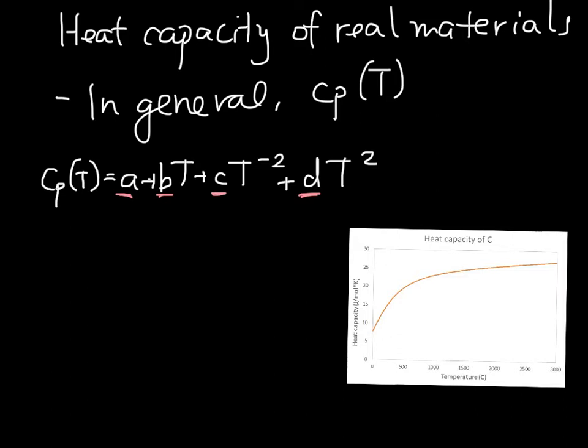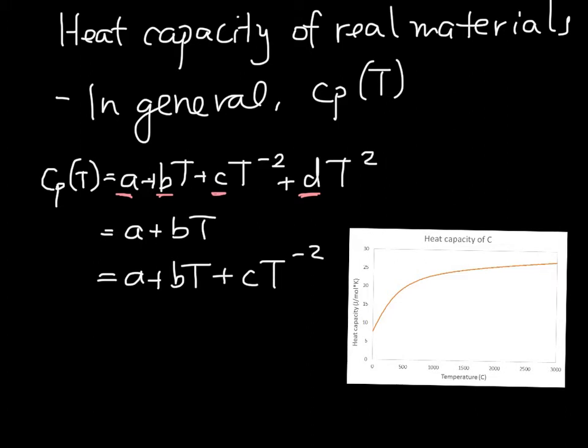It isn't always that complicated. Sometimes it's as simple as a + bT, or sometimes a + bT + cT⁻². Sometimes just a constant is enough. Different materials have different values of heat capacity, and these are specific to each material.